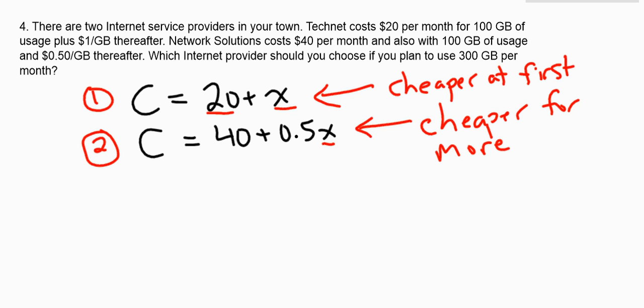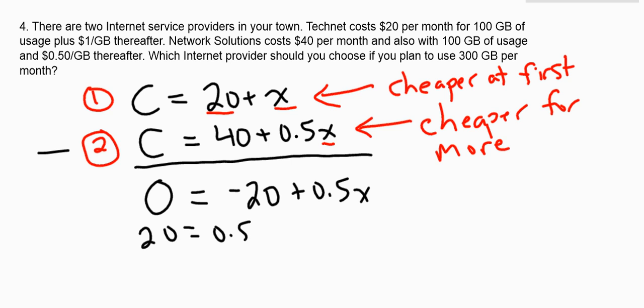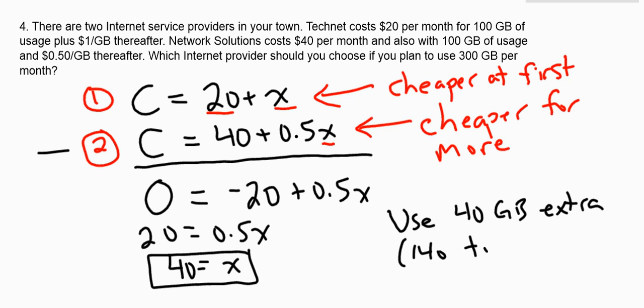We're going to solve this system of equations, and let's solve it by elimination. They're already set up nicely. I'm going to subtract equation two from equation one. So C subtract C is zero. I've eliminated C. 20 subtract 40 is negative 20. 1x subtract 0.5x is positive 0.5x. Here I've eliminated one of my variables, so now I can solve for x. Negative 20 equals 0.5x, so x is 40. What that means is that if I use 40 gigabytes beyond the 100, so if I use 40 gigabytes extra, or if you want 140 total, then both companies charge the same.